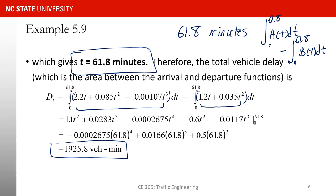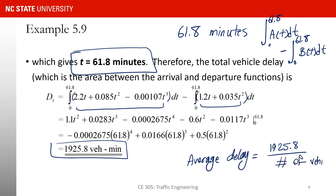The total delay is 1925.8 vehicle-minutes. To find the average delay per vehicle, divide this value by the total number of vehicles processed by t equal to 61.8 minutes. At that time the queue is zero, so the number of vehicles processed equals the number that arrived — it doesn't matter which value you use for the denominator.